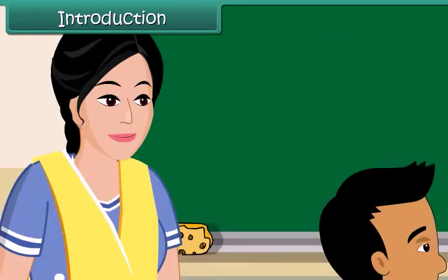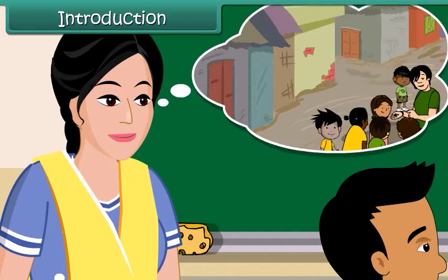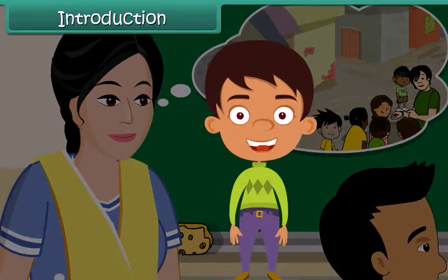Ramesh's mother knows the reason for his absence. They live in a slum area, and Ramesh falls ill frequently because of his unhealthy surroundings. However, Ramesh's mother cannot understand how she can improve their surroundings. Let us understand how we can keep our surroundings and ourselves clean.